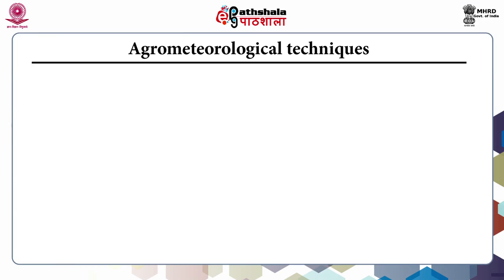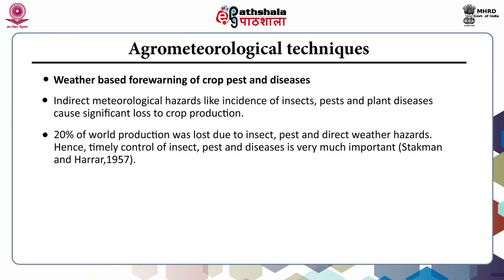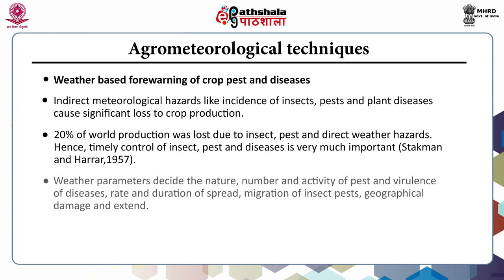Next are agrometeorological techniques. Weather-based forewarning of crop pests and diseases is important because indirect meteorological hazards like incidence of insects, pests, and plant diseases cause significant loss to crop production — 20% of world production is lost due to insect pests and direct weather hazards. The weather parameters influence the nature, number, and activity of pests, the virulence of diseases, rate and duration of spread, migration of insect pests, and geographical extent of damage.